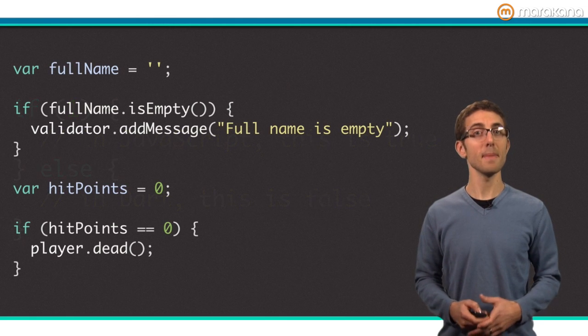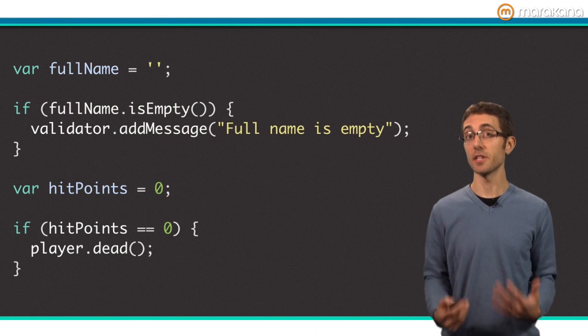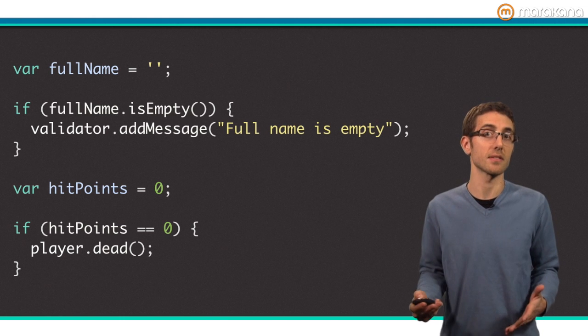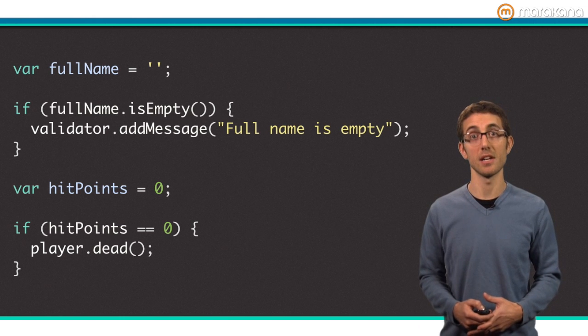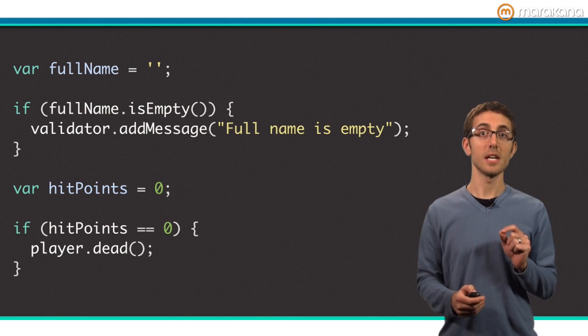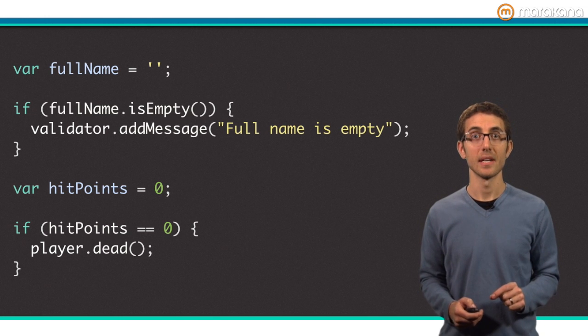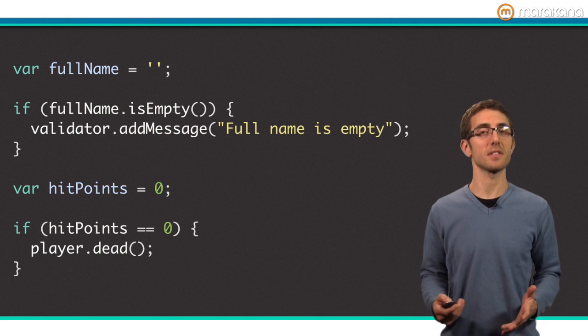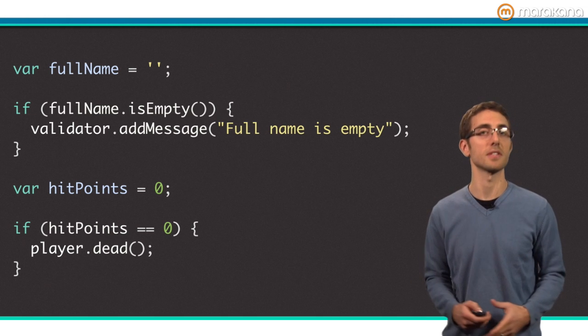Instead of using many different objects for truthiness and falsiness, you can instead explicitly check for values or states. For example, instead of just checking if hit points, you should check explicitly if hit points is equal to zero. I personally really like this as the code is clear and the developer doesn't need to learn a bunch of truthy or falsy values.